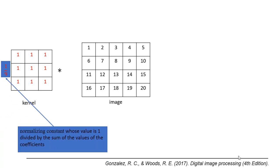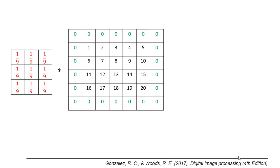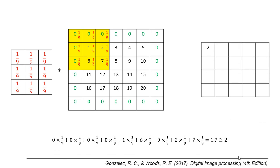Here, 1/9 is a normalizing constant whose value is one divided by the sum of values of the coefficients. Now let's multiply the normalizing constant with the kernel and pad the image. We apply the filter to the first element of the image, multiply the kernel with the part of the image under the kernel, and put the summation of this product in the corresponding pixel in the output image. We repeat this procedure and so on.